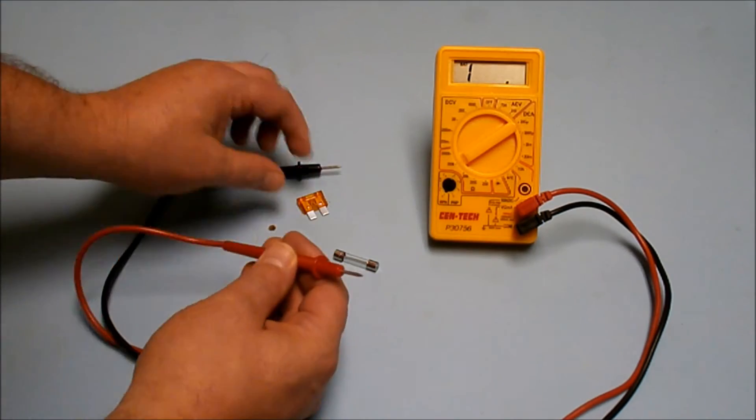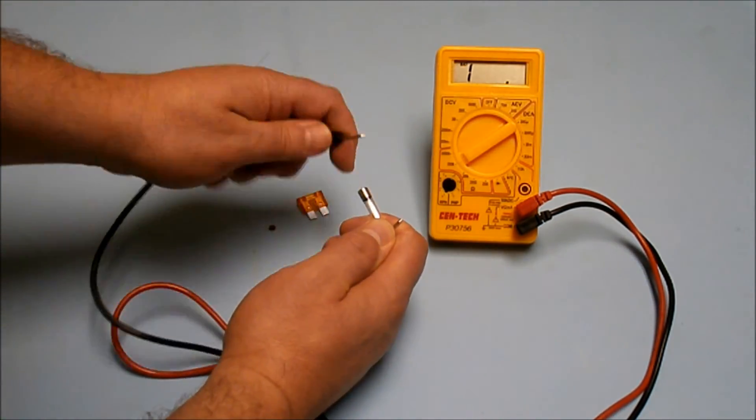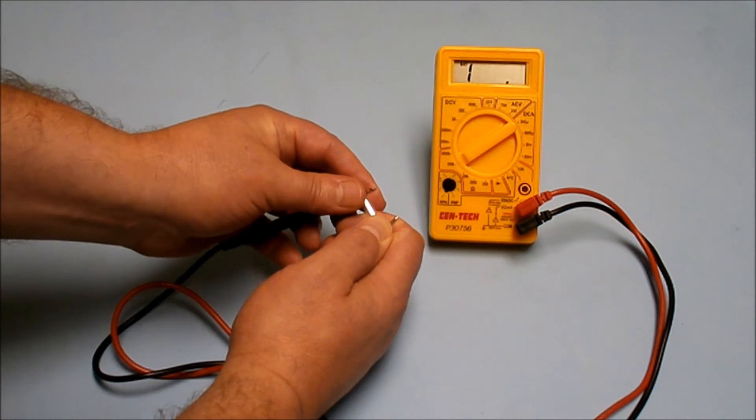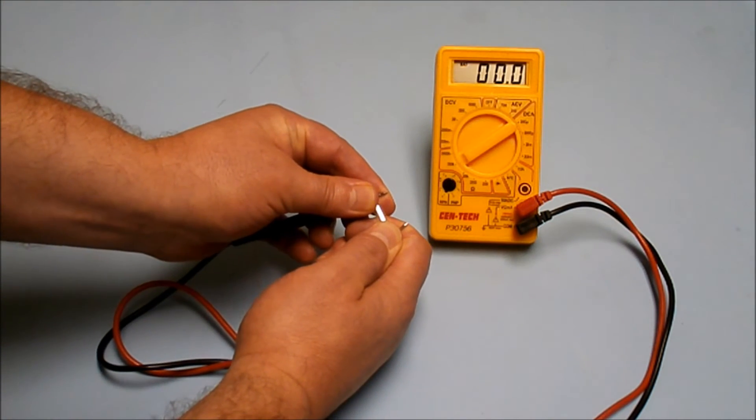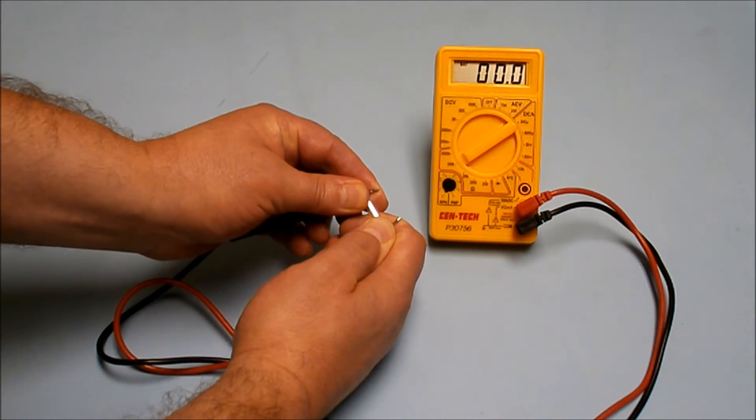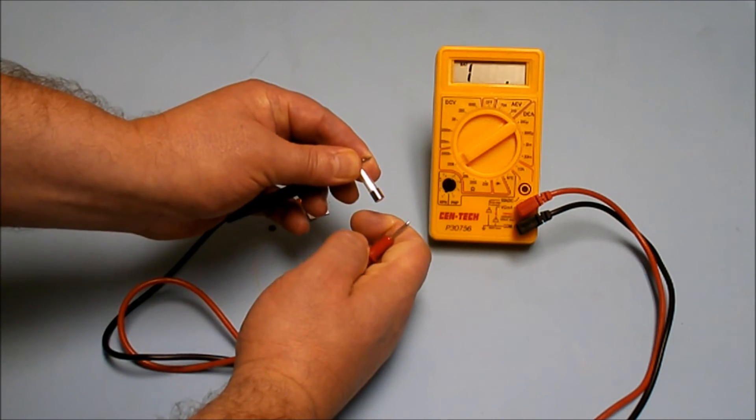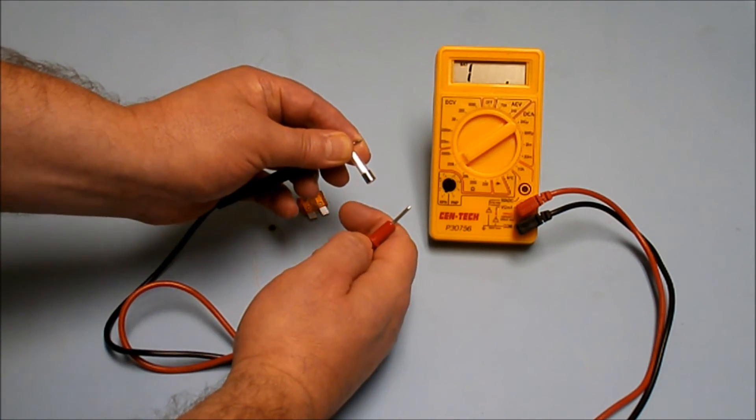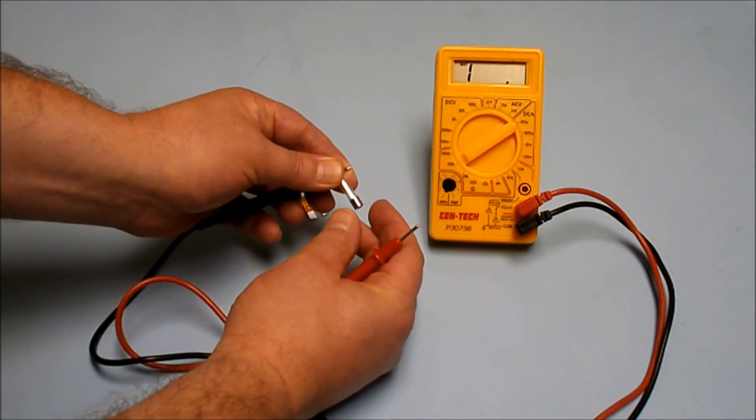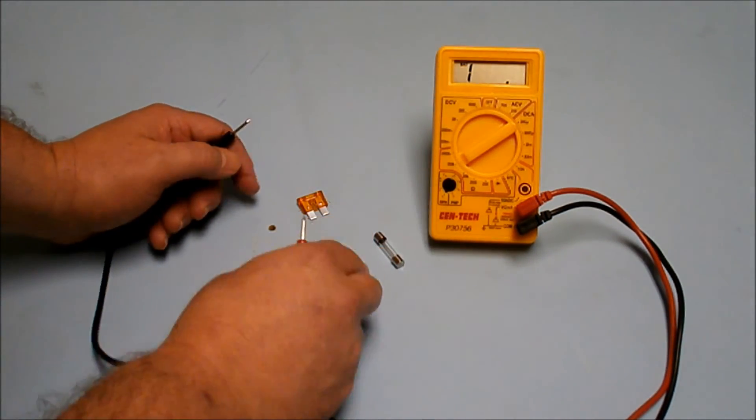So it's pretty simple. You just take your fuse, hold your multimeter lead to one end and the other multimeter lead to the other end. You can see we have zero resistance on this fuse, so that indicates that it's a good fuse. If you did this test and you got I for infinite resistance, then the fuse would be bad. It would be a blown fuse. That's how you're going to test a glass fuse.